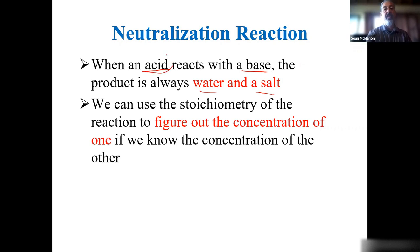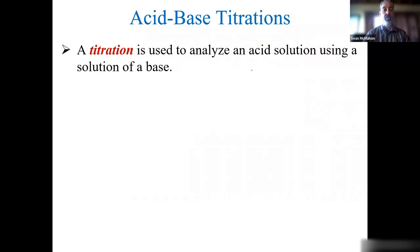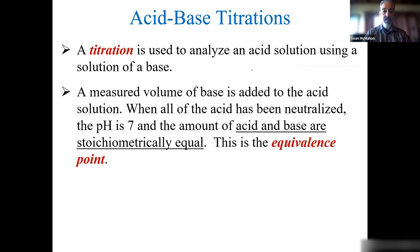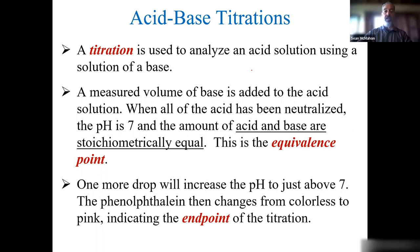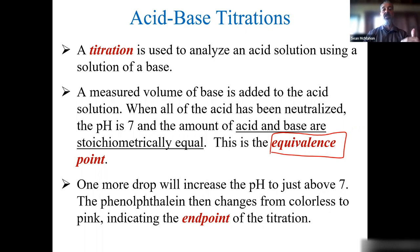If I want to figure out the concentration of an acid, I can do that by adding a known amount of base until we get to a one-to-one mole ratio. A titration is used to analyze acidic solutions using standardized base solutions — solutions of a base where we know the concentration. When all of the acid has been neutralized, we know that the pH is 7 and the acid and base will be equal in concentration. That is referred to as the equivalence point.